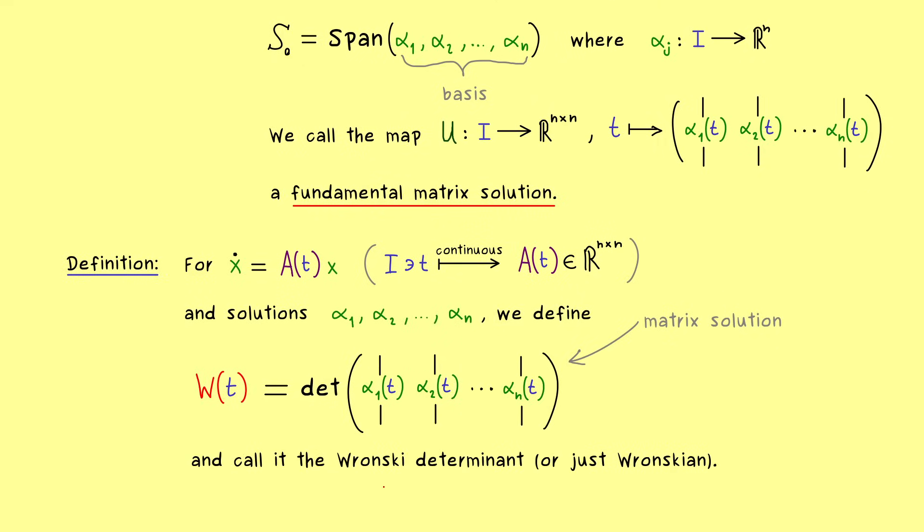So please keep that in mind, the Wronskian determinant is not completely fixed because it depends on the solutions you put into the matrix. Moreover, you also often see just Wronskian as an abbreviation for this determinant as well.